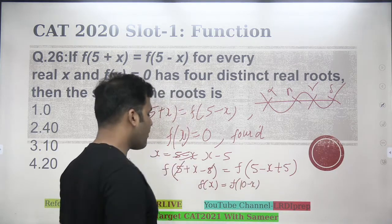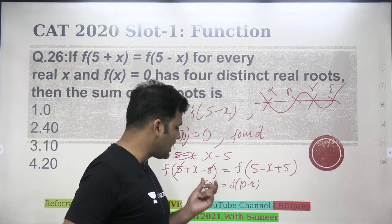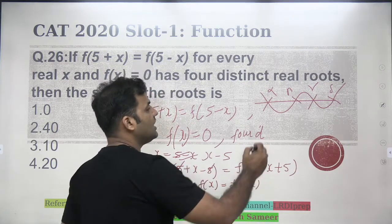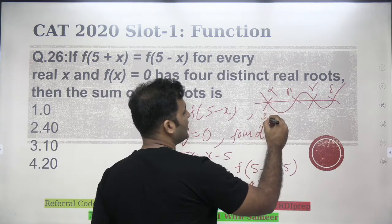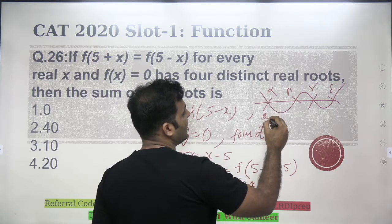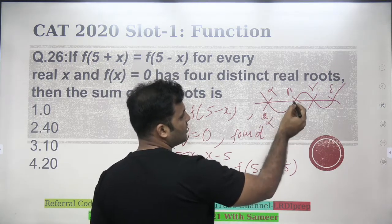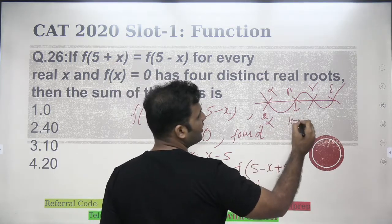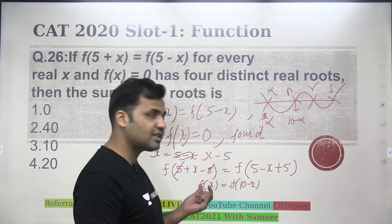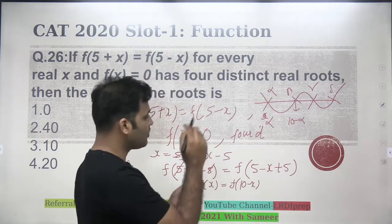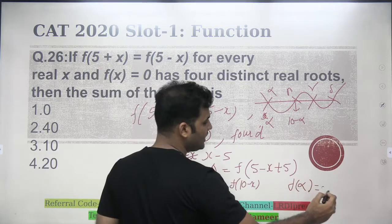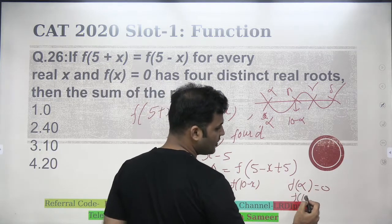What does it mean? That means the value of f of x is same as value of f of 10 minus x. So, if I am saying that alpha is one of the root of the equation, the another root will be same as 10 minus alpha. Because if I am saying alpha is the root of it, that means f of alpha will be 0. Now, if f of alpha is 0, f of 10 minus alpha will also be 0.